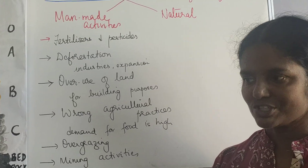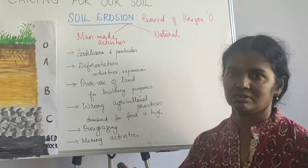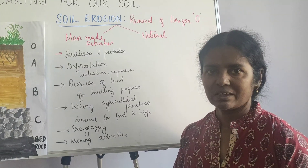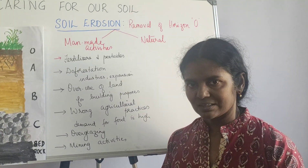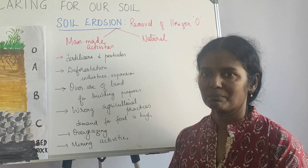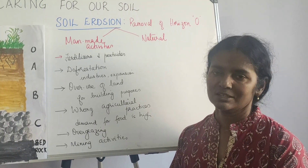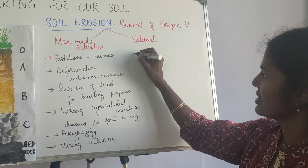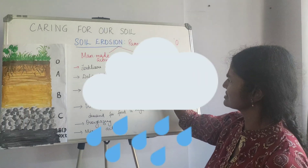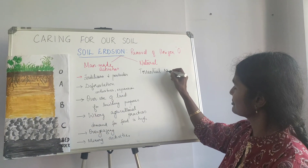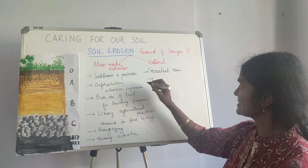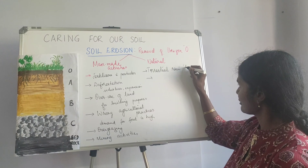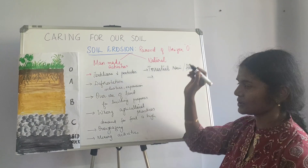Now we'll move on to the natural reasons. For example, near our house there was a huge deep pit, and two weeks back when there was heavy rain, all the soil on top was just washed off and filled the pit. So natural erosion can happen by torrential rains — whenever there is heavy rain, we see this. Torrential rain or floods can always result in soil erosion, washing it away.